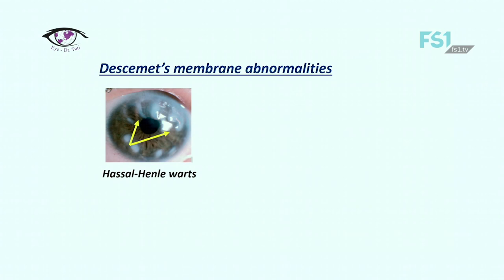In this slide I would like to continue with Descemet's membrane abnormalities. Due to aging there can be focal overproduction of basal lamina, and when there is stromal thinning in the cornea, Descemet's membrane may bulge forward, forming Hassall-Henle warts. Here in the slide, these white dots on the cornea are exactly the clinical picture of Hassall-Henle warts.